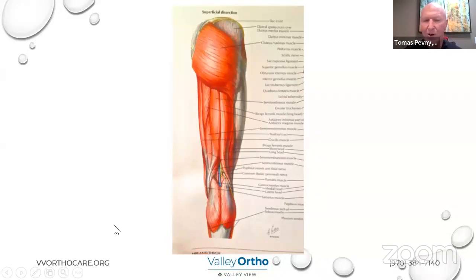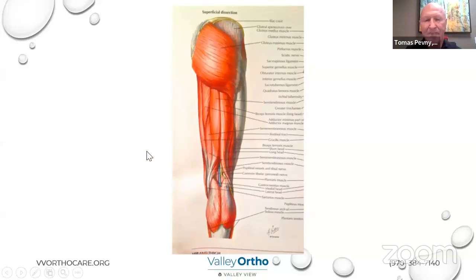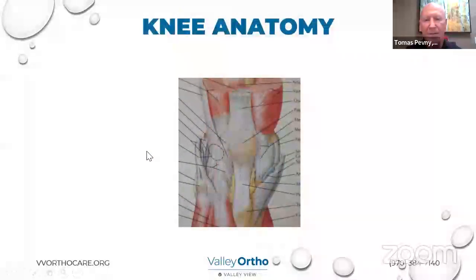You've probably heard of what's called a Baker cyst or a popliteal cyst — it's like a little water balloon that forms in the back of the knee, in that little triangle region. Now we're going to look at the front of the knee, where what's called the extensor mechanism is.